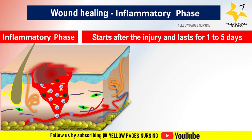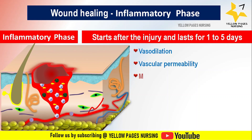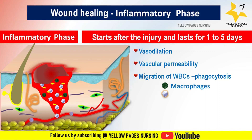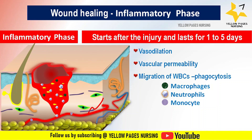Next is the inflammatory phase, which starts shortly after the injury and lasts approximately one to five days. First, vasodilation — dilation of blood vessels near the wound — leads to increased blood flow. Next, vascular permeability is increased, which allows immune cells and growth factors to enter the wound site. Then, neutrophils and macrophages migrate to the wound site to remove bacteria, debris, and damaged tissue through phagocytosis.